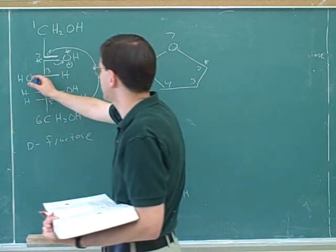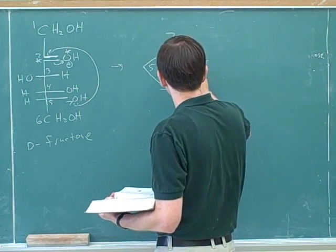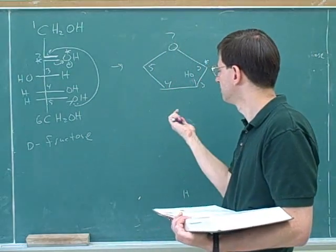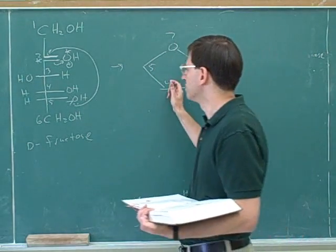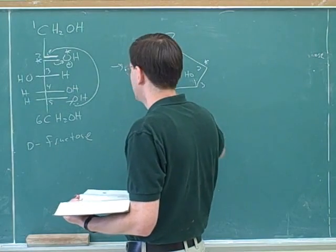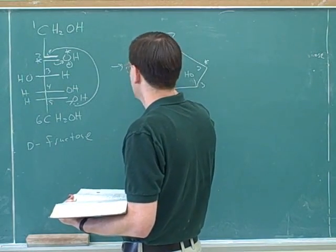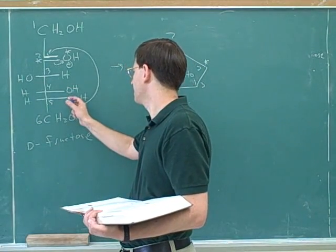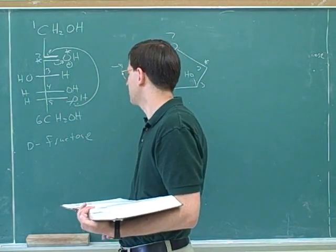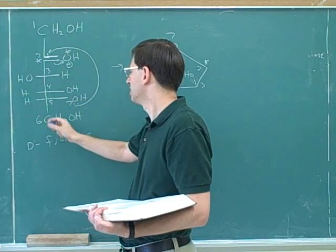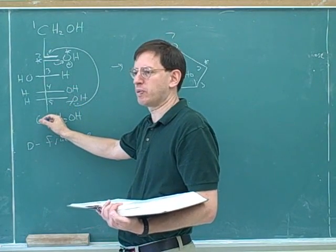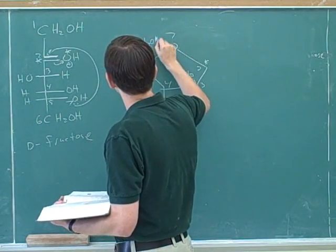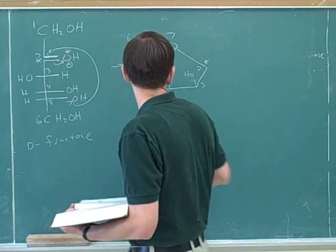Attached to number three, the hydroxy is on the left, so it should be up. The number four — the hydroxy is to the right, so it should be down. The number five: where do we put the substituent on number five? Well, we can't use the rule that right means down because this hydroxy is in the ring, but remember that for a D-sugar, this last substituent should always be pointing up. So I'll put the number six carbon pointing up.